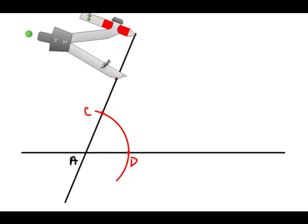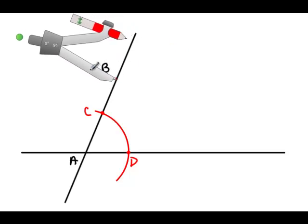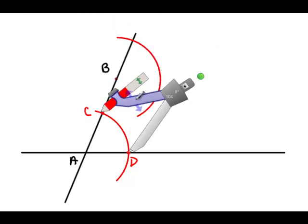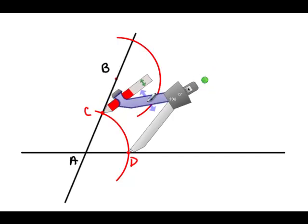Using that same exact compass arm radius, place your compass point on point B now. And on the same side of the transversal, make your arc that's the same as the last arc you just made.